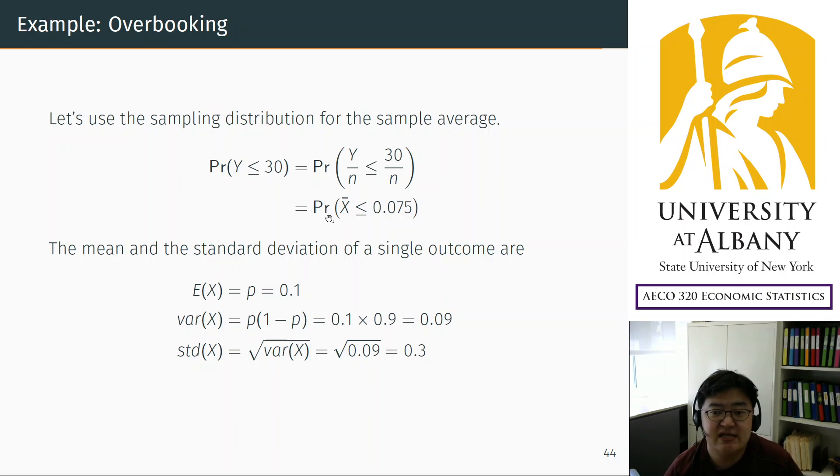Which means the average cancellation rate—I would interpret this as cancellation rate, probability of cancellation. Among the reservations, cancellation rate is smaller than 0.075. Then you are in trouble. The company is in trouble. This is the target probability we need to calculate.